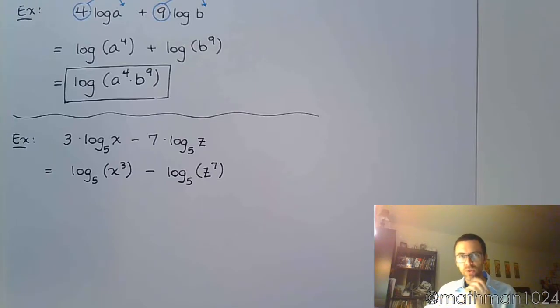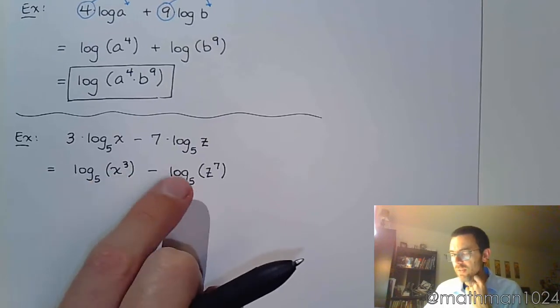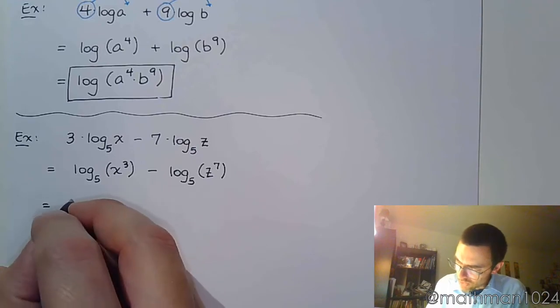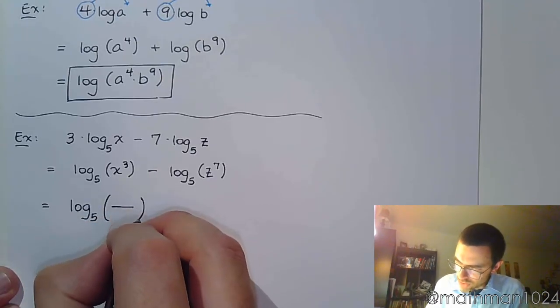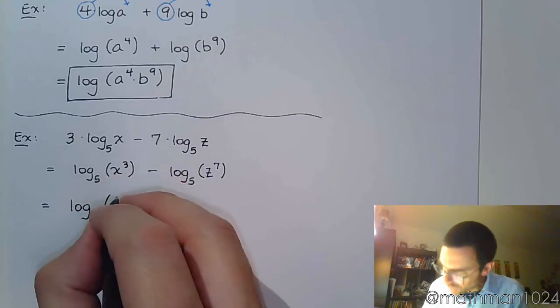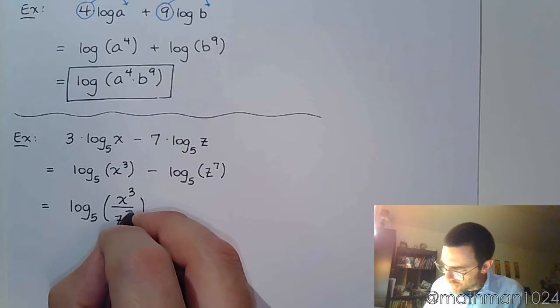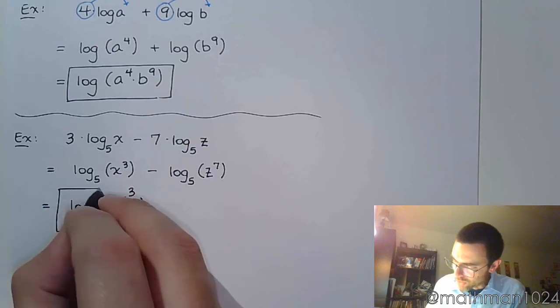Now we're going to try to condense these guys. The only way we can condense them is because these bases are the same. If this were base 5 and that's base 3, these guys couldn't go together as a single logarithm. Since I have subtraction, the difference of logs, this is going to lead to a quotient inside that logarithm. You're not doing log divided by log, you're doing log of a quotient. So x to the 3rd is in the numerator and z to the 7th is in the denominator.